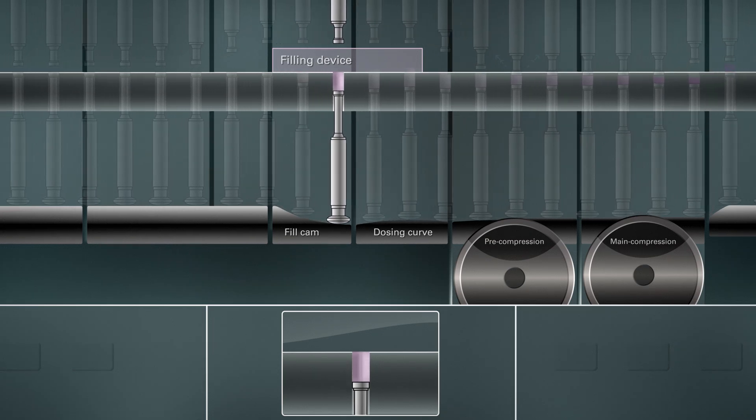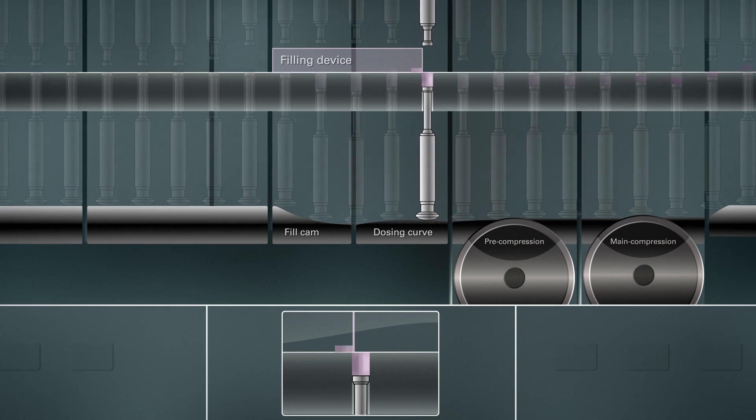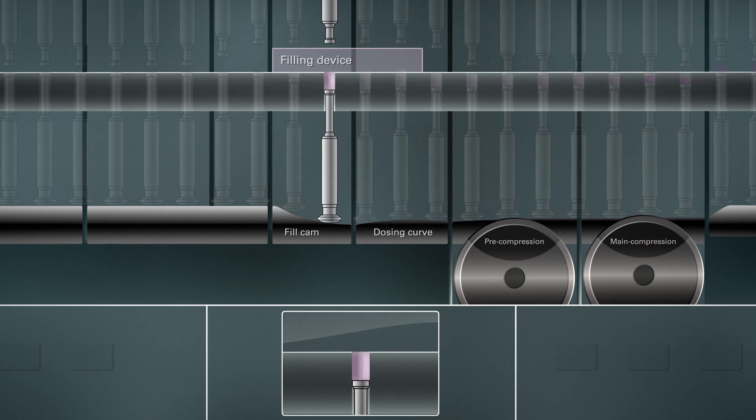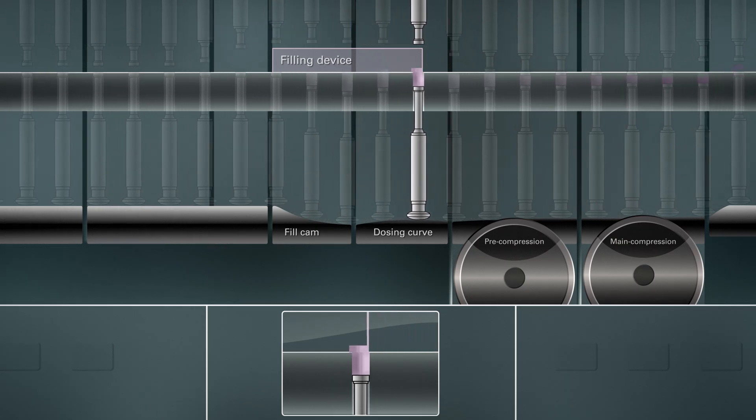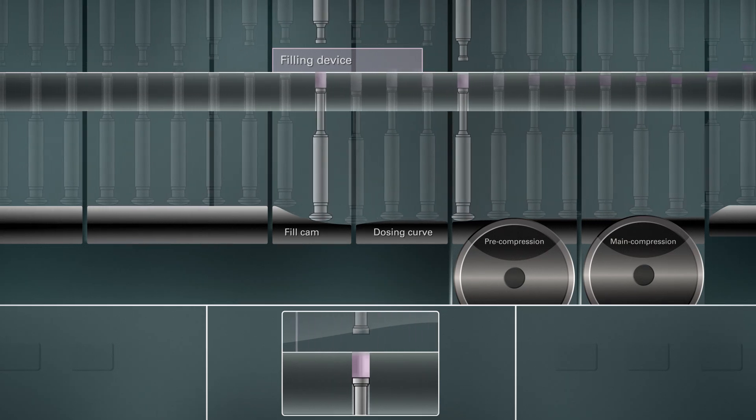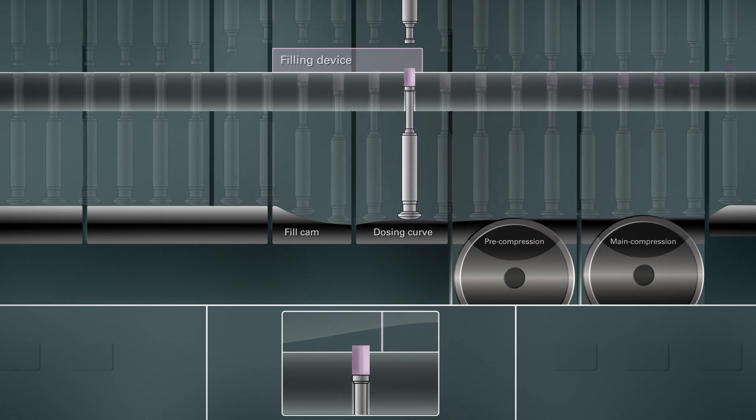The next step is to adjust the material to the correct volume. To do this, the lower punches move up in the dosing cam to adjust the right volume of material. The surplus material remains for further use in the filling device.